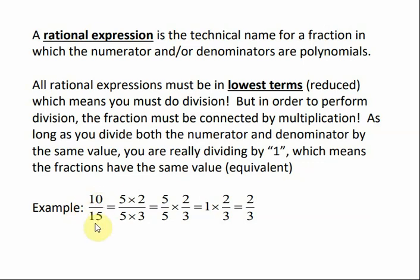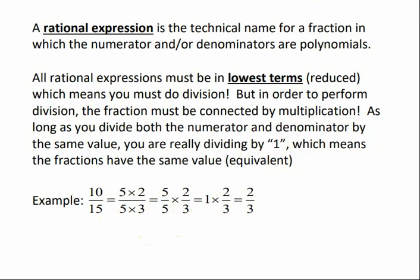For example, if we do this with just numbers, we could break these numbers down into their factors. 10 is the same as 5 times 2. 15 is the same as 5 times 3. And we could separate those factors by multiplication. Now, 5 divided by 5 would just reduce to 1, and then 1 times 2 thirds would just be 2 thirds. So that's basically the idea of what we're going to be doing, only we're doing it with polynomials.